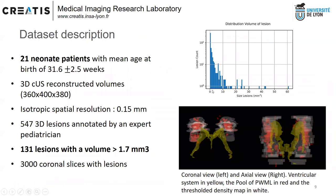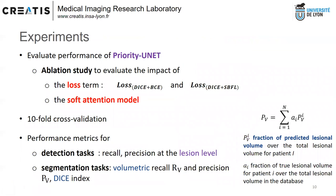Concerning the data, we collected CUS exams of 21 neonates, annotated more than 500 lesions, and considered 131 lesions for this study with a volume higher than 1.7 cubic millimeters. We evaluated the performance of our model based on a 10-fold cross-validation study, performed an ablation study to evaluate the impact of the loss term and the soft attention model, and used standard performance metrics for detection and segmentation tasks.